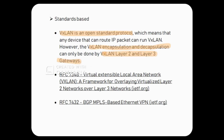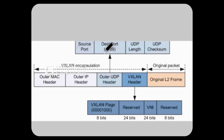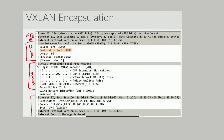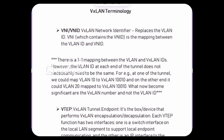VXLAN ko RFC 7348 mein define kiya gaya hai aur ye UDP port number 4789 pe operate karta hai. Toh isse pehle ki hum discuss kare ki hume VXLAN kyun chahiye, let's quickly discuss some important VXLAN terminology.